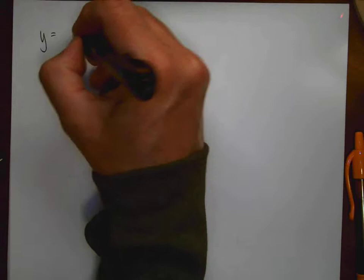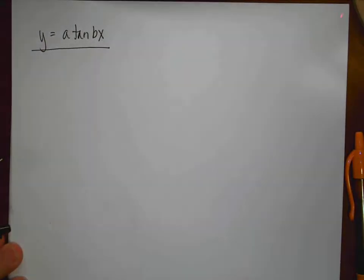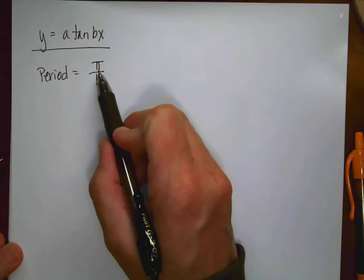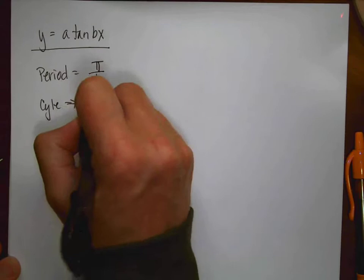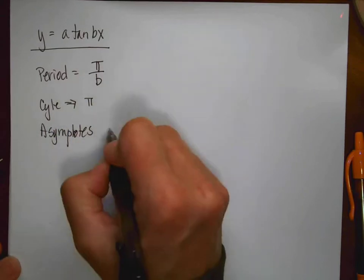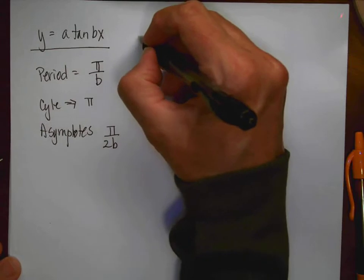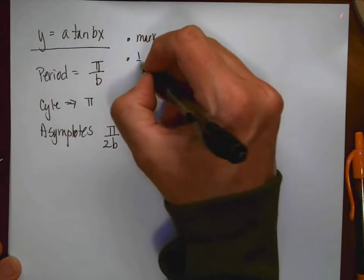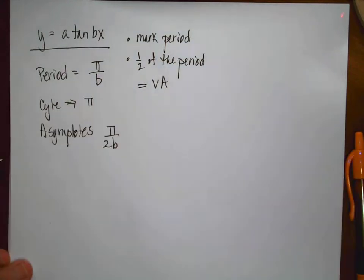The next type of functions to graph are tangents. For y = a·tan(bx), the period is π/b — notice that's half of what it was for sine and cosine, so one complete cycle happens by π. Tangent also has asymptotes, which occur at π/(2b). When graphing tangent, mark your period, and the half-period points will be vertical asymptotes.